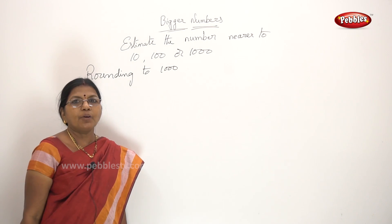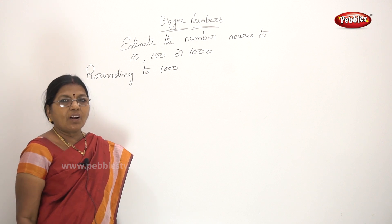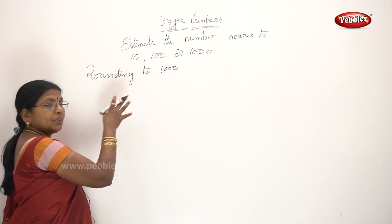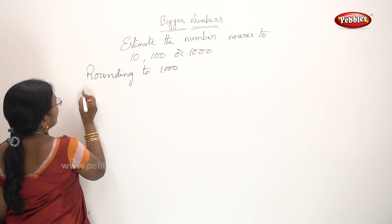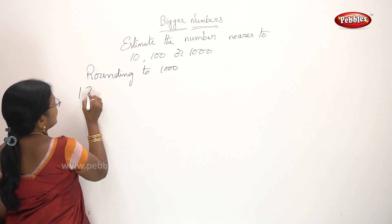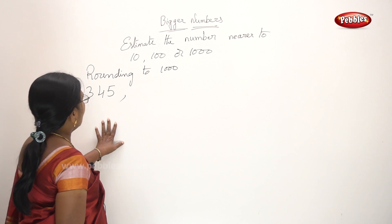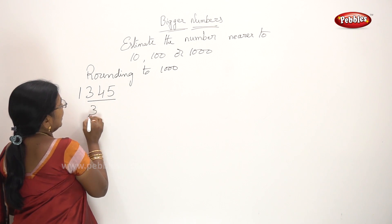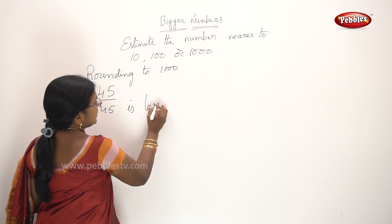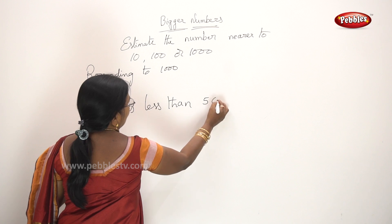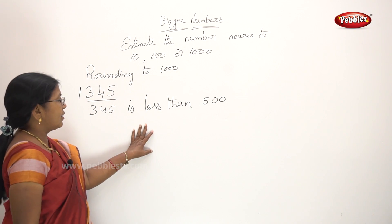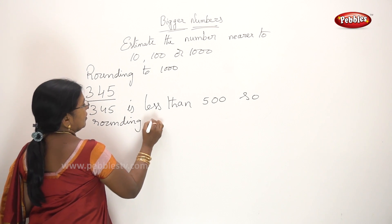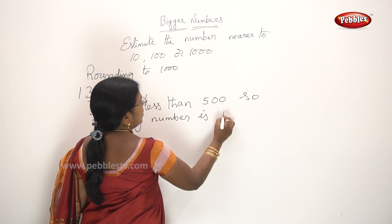Now, rounding to 1000. For rounding to 1000, we look at the last three digits. If the three digits are less than 500, the rounding number is 1000 only — we keep the same thousands place.